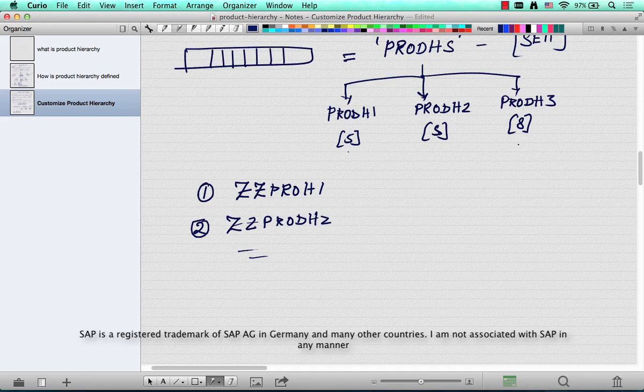And if you want to have, say, 5 plus 5 plus 4 plus 4, right? Like four different levels: 5 plus 5 plus 4 plus 4. Here is what you can do. You can change the definition of PRODHS to PRODH1, PRODH2—you can let them remain the same. Remove this guy and then have ZZ PRODH1 for the first four characters.